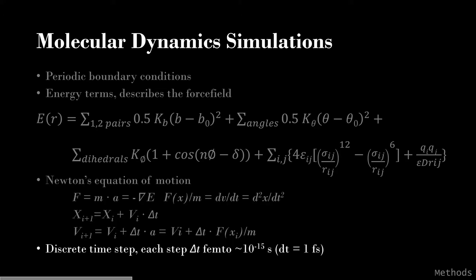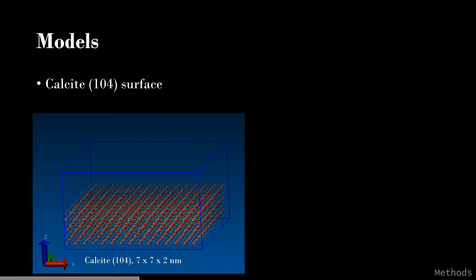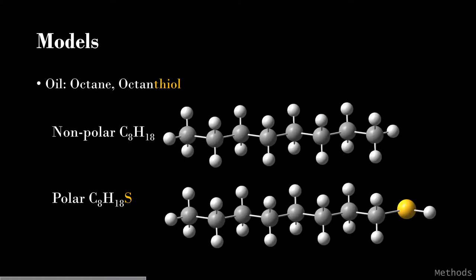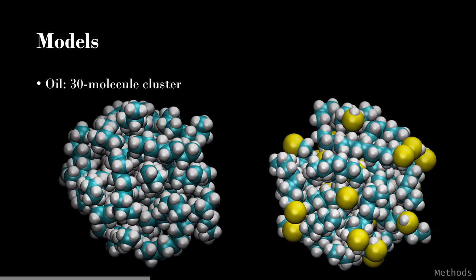The force applied to individual particles can be integrated using Newton's equation of motion, with coordinates and velocities calculated based on discrete time steps. In terms of the simulation model, calcite 104 surface was chosen to represent mineral phases in shale, because it is one of the most common mineral surfaces, is very well studied, and has a relatively simple structure. The kerogen surface was based on molecular fragments of a type II kerogen model. For the oil model, octane and octanethiol were used to represent non-polar and polar oil compounds, and molecular clusters of 13 molecules were built to represent oil droplets. The Gibbs free energy surface was calculated for the oil-surface interaction to evaluate affinity between oil and surface under different conditions.